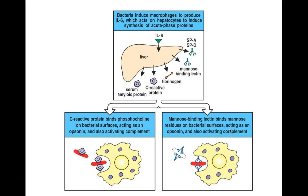For the mannose-binding lectin pathway of complement activation, we take a look at several different types of proteins that are produced by the liver in the very early stages of essentially an alert to the non-specific factors of immunity in your body.